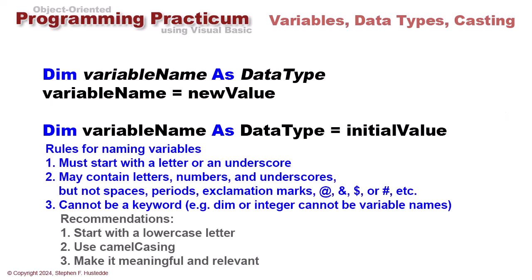My recommendations are: start with a lowercase letter, use camel casing in which each subsequent word of that name has an uppercase letter, otherwise they're all lowercase, and make it meaningful and relevant. Other times I'll use just a single character like i or j or maybe xyz when using it as a counter in a loop. That's pretty common practice.